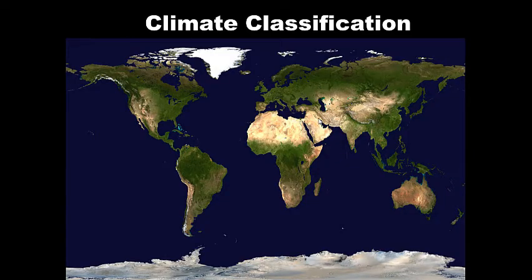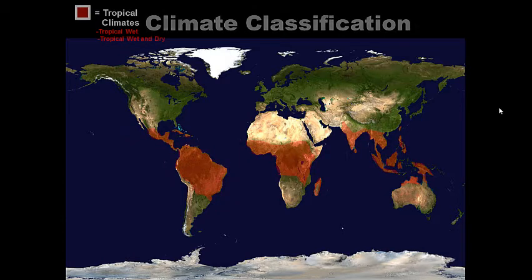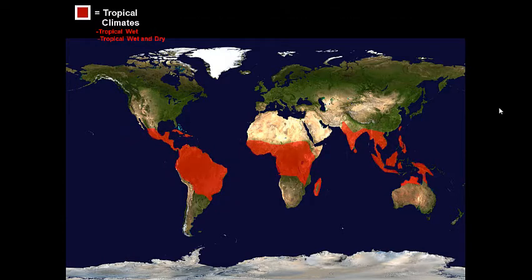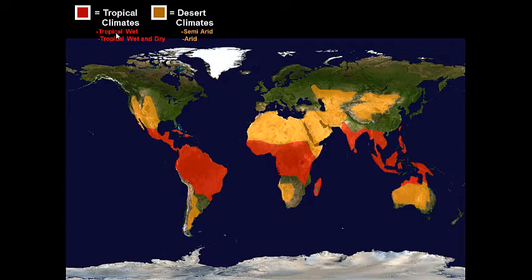Looking at this map, you can get a sense for where the dry, tropical, and polar climates are. We have tropical climates right around the equator — there are two types: tropical wet and tropical wet and dry. There are also arid or desert climates: semi-dry, a little dry, and really dry.